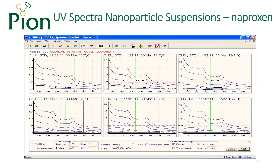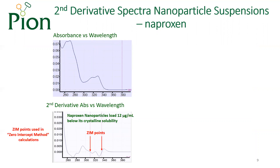Here we show UV spectra collected in dissolution vessels using all eight of the fibre optic UV probes. Aliquots of naproxene nanosuspension were injected into each vessel at concentration levels below and above the solubility limit of naproxene. At concentration levels below the solubility limit, the solution would be totally clear and the baseline would be horizontal. At concentrations above the solubility limit, the naproxene would be unable to fully dissolve, and light scattering of undissolved material would lead to a sloping baseline. The UV spectrum at the top left shows the fully dissolved drug, with the corresponding second derivative spectrum displayed on the bottom left at a concentration of 12 micrograms per milliliter, below the crystalline solubility. Indicated on the second derivative spectrum are two specific wavelengths where the y-value is zero, referred to as zero intercept points.